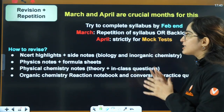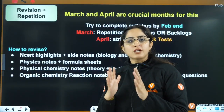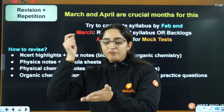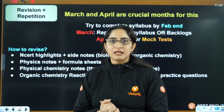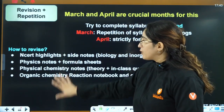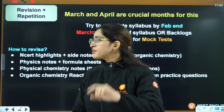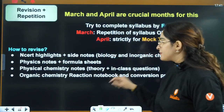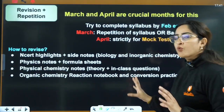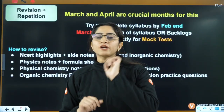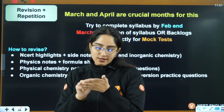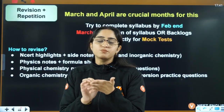Here's how to revise correctly. Don't go through your full chapter again and again — that's not how revision is done. For Biology and Inorganic chemistry, revision is from NCERT highlights and side notes. For Physics, use your notes plus formula sheet. For Physical chemistry, use notes, theory in class questions, plus formula sheet. For Organic chemistry, use your reaction notebook and conversions. In addition to all of this, maintain a mistake notebook. Every time you make a mistake in any mock test, note it down. During March revision, check that notebook to see if you're still making the same mistakes.